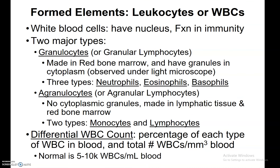Now let's move on to leukocytes, or white blood cells. White blood cells do have nuclei, and they're really important for function in immunity. We talked about the granulocytes and the agranulocytes. The granulocytes can also be called granular leukocytes. These are also made in the red bone marrow and they have granules, which you'll see when you look at them after they've been stained under the microscope. There are three types of granulocytes.